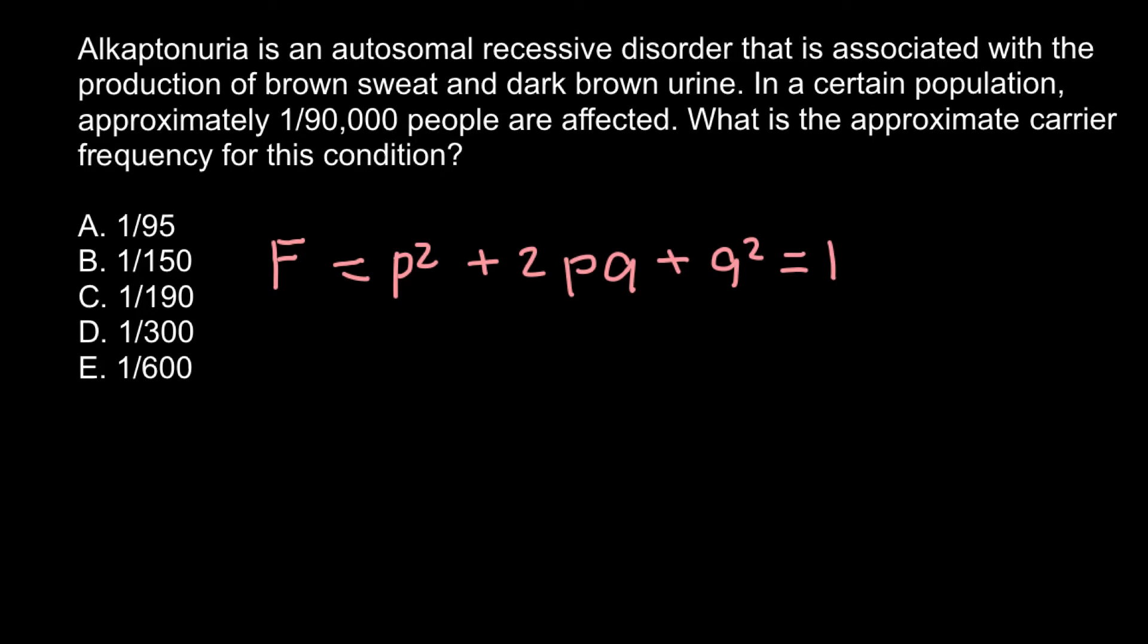So p² in this formula stands for the homozygous dominant genotype, 2pq stands for the heterozygous genotype, and q² stands for the frequency of the homozygous recessive genotype. If we add frequencies of all three genotypes, this would equal one or 100 percent, because one here equals 100 percent.